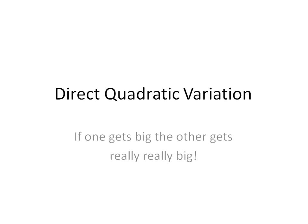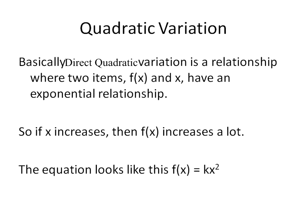If one gets bigger, the other gets really big. Basically with direct quadratic variation, it's a relationship where two items, f(x) and x, have an exponential relationship. So if one increases, the other increases quite a bit. So our function at x is equal to our constant times our input value, or that x value, squared. You'll see that this will become large very quickly because you have x squared.